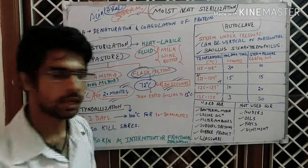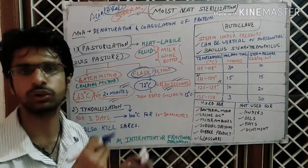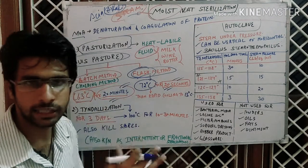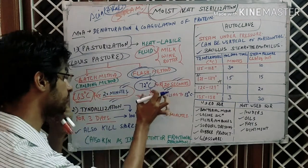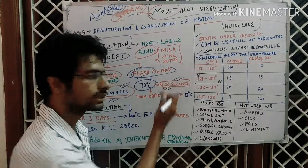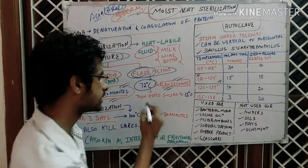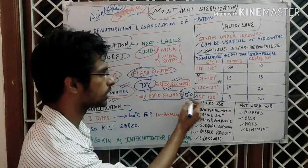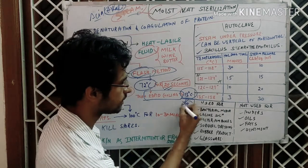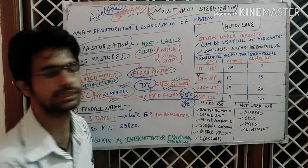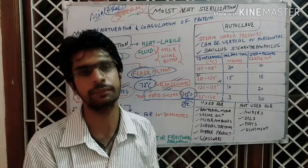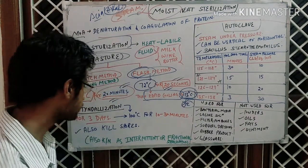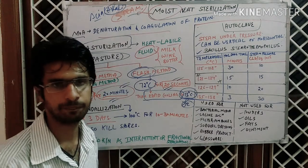An important point to note is that the flash method also involves cooling. After heating the fluid at 72 degrees Celsius for 20 seconds, rapid cooling is done to 13 degrees Celsius. Why cool to only 13 degrees Celsius and not zero degrees Celsius? Because if you cool it to zero degrees Celsius, the fluid may get deteriorated or its chemical nature may change. That's why we cool only to 13 degrees Celsius.